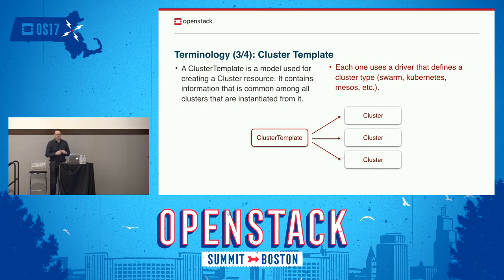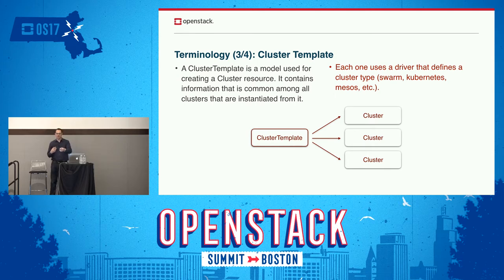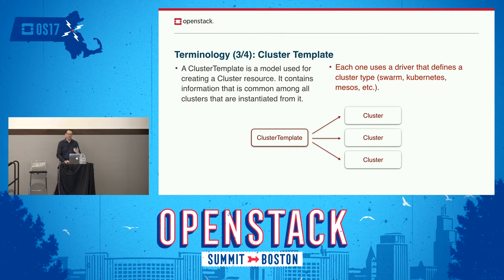The third term is a cluster template. You can think of it like a Heat template — it's a way to easily create new Magnum clusters. It's slightly different in that it's represented as a cloud resource in the Magnum API, whereas Heat templates are file artifacts. A cluster template resource is present through the API independent from a file artifact, so you can use them again and again. As a cloud operator, you can create one, mark it as public, and all your cloud users can access it without distributing a template file.